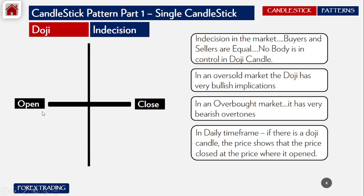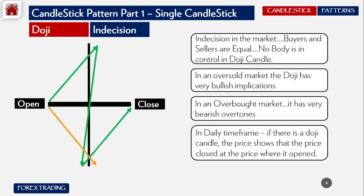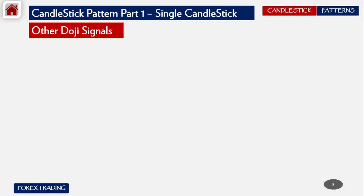Looking at the doji's structure: the price can first go up to the upper wick, then all the way to the bottom, and come back to close at the same price. In another scenario, the price opens, goes down to the lower wick, goes all the way to the upper wick, then comes back and closes at the same level where it opened. It can have two movements, but it always closes where it opened — that's why we call it a doji or indecision candle.